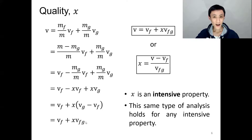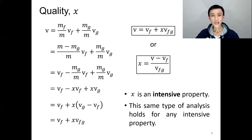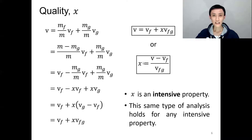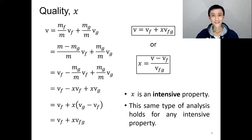V_fg is defined as v_g minus v_f. Since the specific volume in vapor phase is always greater than in liquid phase, V_fg is always a positive number. The conclusion is: specific volume v = v_f + x · v_fg, or equivalently, x = (v − v_f) / v_fg. Since x is an intensive property, these expressions hold for any intensive property: x = (u − u_f) / u_fg for internal energy, x = (h − h_f) / h_fg for enthalpy, and x = (s − s_f) / s_fg for entropy.